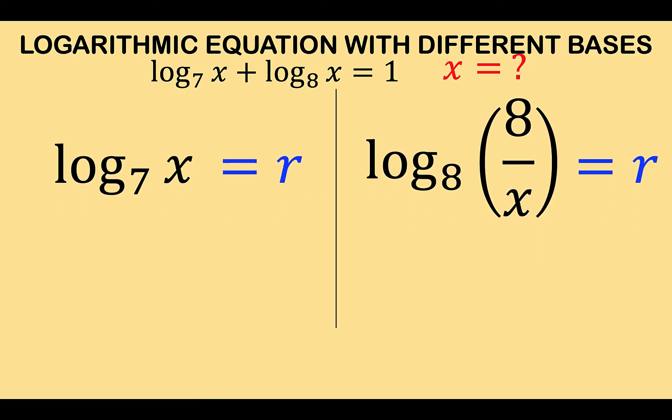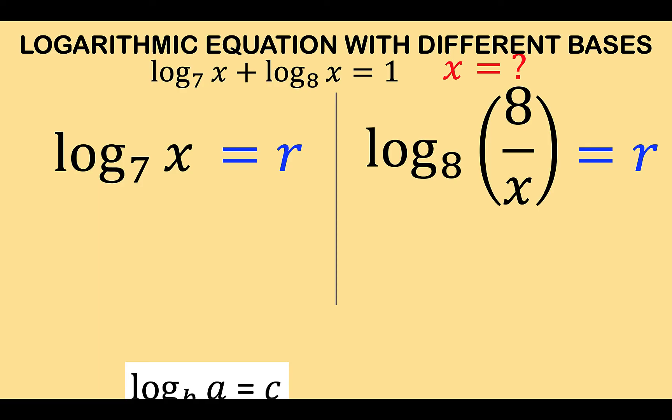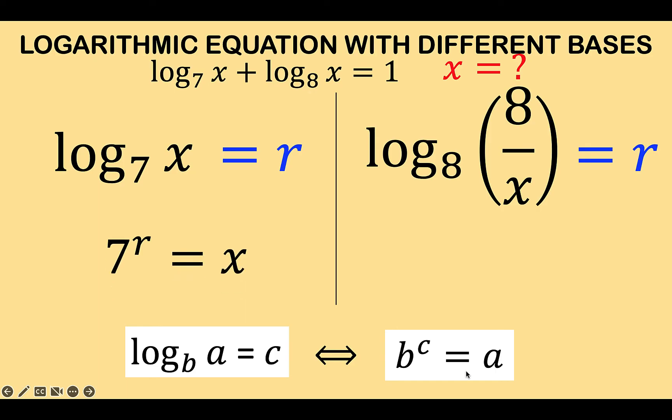Now in here we can solve this for x using this property of converting from logarithmic to exponential. Then the left side becomes the base raised to r is equal to x. And so we now have an equation here solved in terms of x and we can do the same thing at the right side. The base is 8. The exponent is r equals 8 over x.